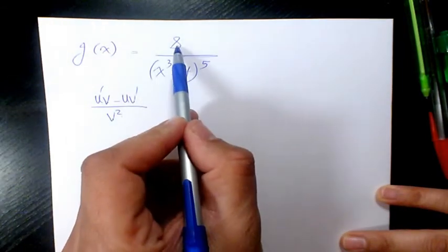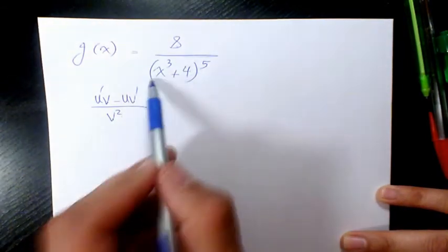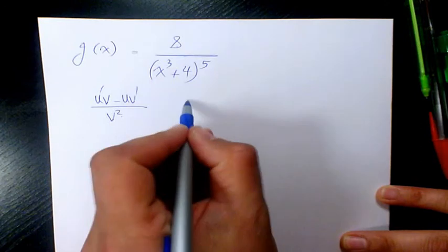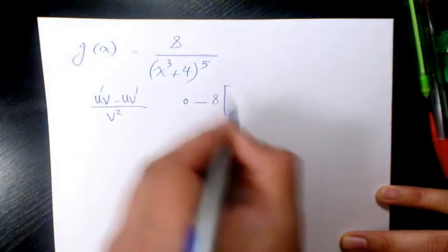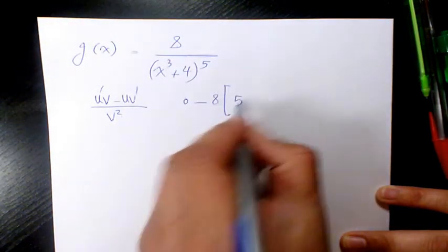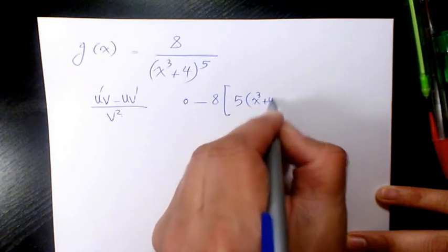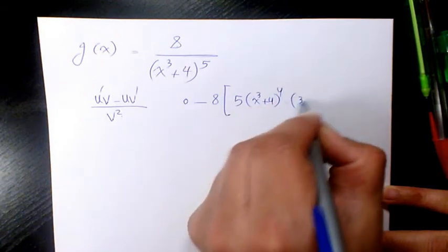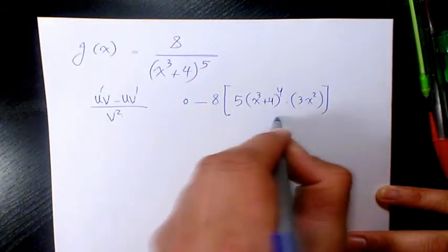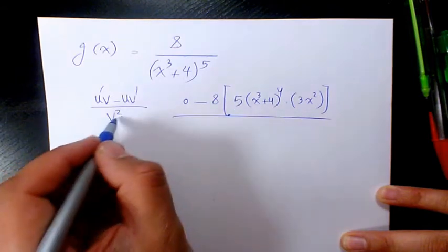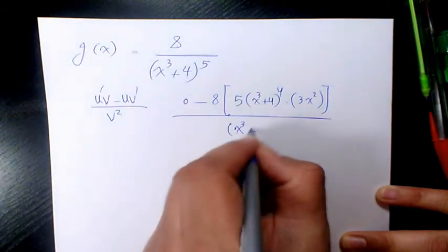The derivative of 8 is 0, so 0 times v is 0. We then have 0 minus 8 times 5 times (x³ + 4)⁴ times 3x², all divided by v squared, which is (x³ + 4)¹⁰.